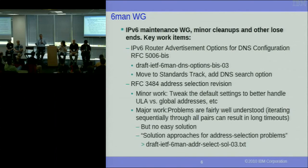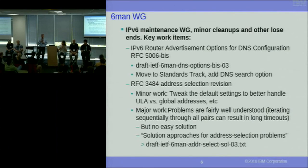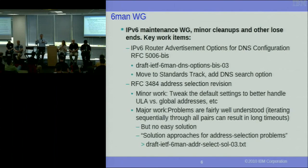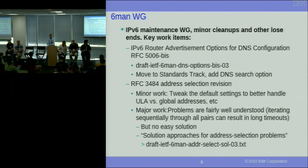The fundamental problem with address selection is that you need a lot of information in one place to make an optimal decision, and that information is scattered around the system with no way to centralize it. Furthermore, the decisions are made in different components of APIs, spread out rather than centralized by the application. I'm relatively skeptical we'll find a magic bullet, but we have to make it better than it is.